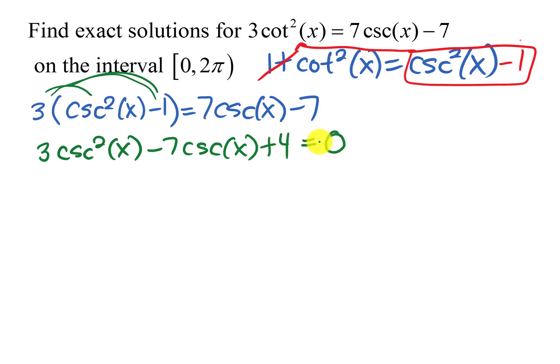So I wanted everything on the same side in descending order because now I'm going to see if I can factor this. So to get 3 cosecant squared x, that would be 3 cosecant x and cosecant x.